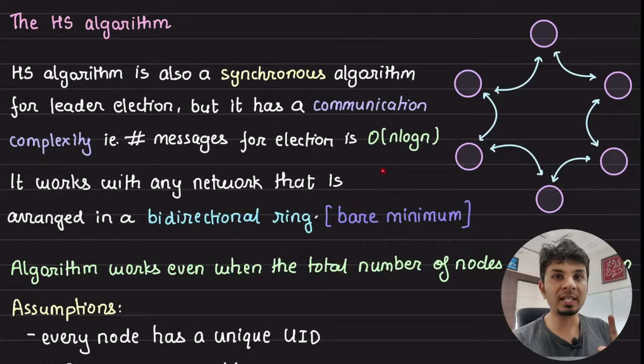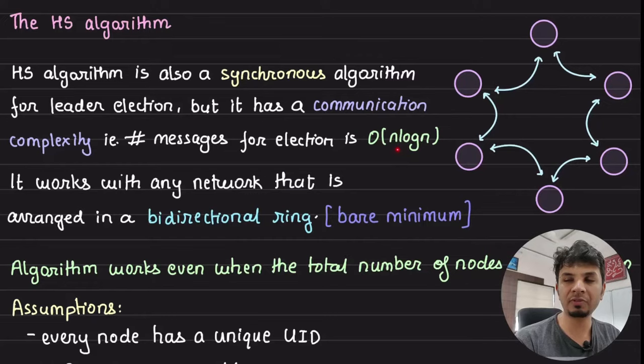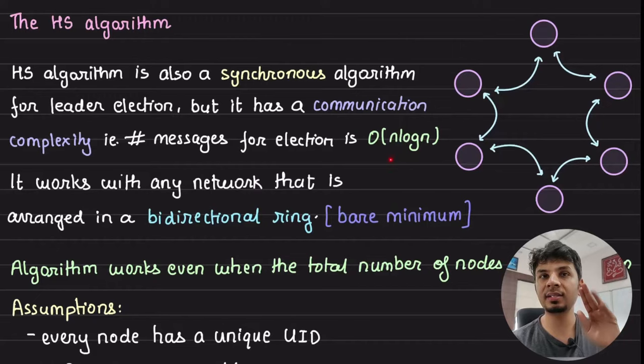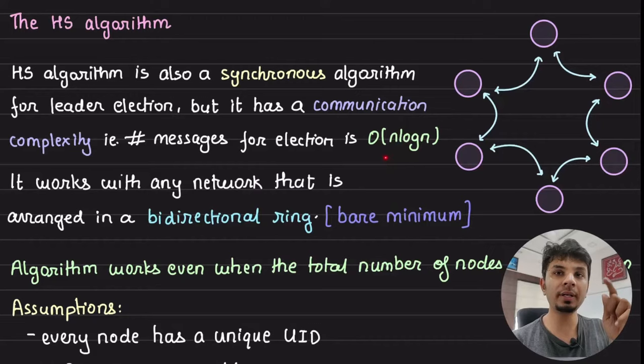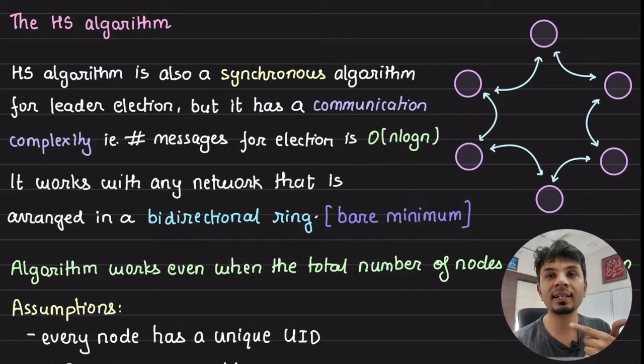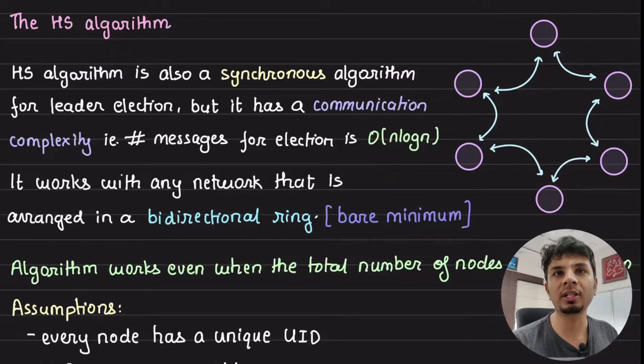The best part of this algorithm is its communication complexity — the number of messages exchanged during leader election is just O(n log n). The LCR algorithm, which we saw in the previous video, had a communication complexity of O(n²). So O(n log n) means the total number of messages exchanged is much more efficient, resulting in very little network congestion.